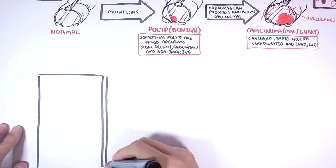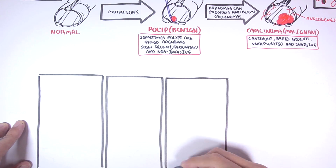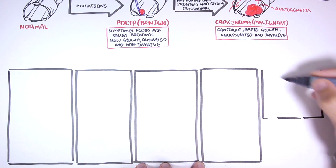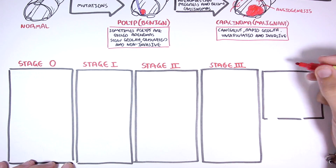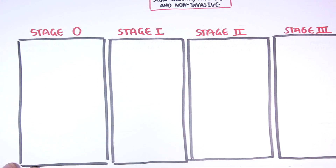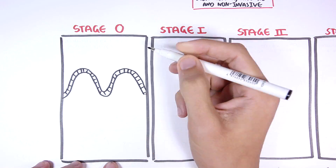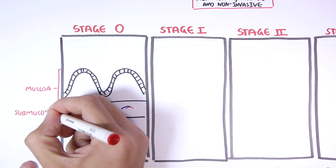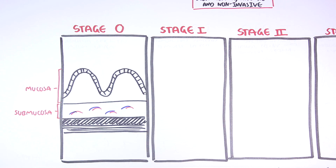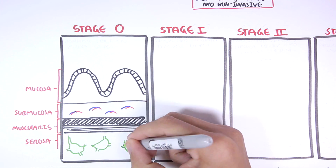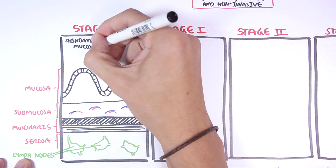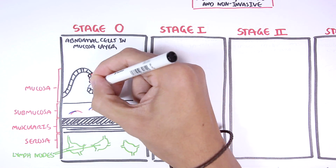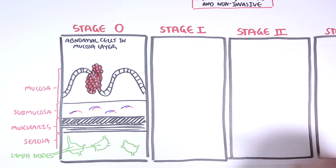Now let us look at the stages of colon cancer. There are different classifications; this is one of them, with five stages in total. Briefly, the anatomical layers of the colon from the top are: the mucosa, the submucosa, the muscularis, and the serosa, and we can also find lymph nodes following these layers. Stage 0 is basically when we have abnormal cells in the mucosa layer that will keep dividing, forming a polyp — the polyp is usually benign.